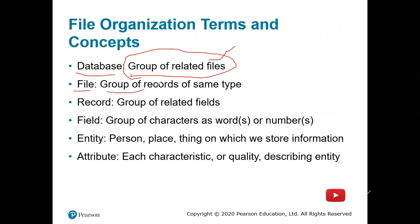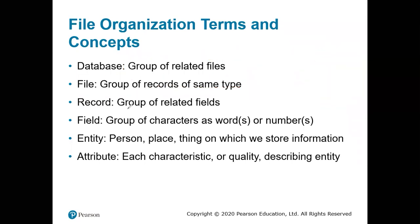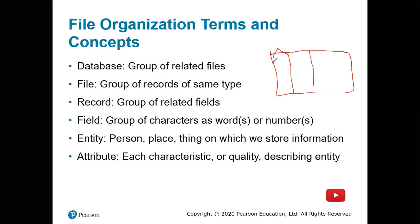A file is a group of records, and records are made up of fields. A record is a group of related fields — for example, a record might contain your ID and your name. A field is a column, so each column you see here is a field.